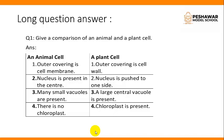Point number 2: In animal cell, the nucleus is present in the center. In plant cell, the nucleus is pushed to one side. Point number 3: Many small vacuoles are present in animal cell. A large central vacuole is present in a plant cell. Point number 4: There is no chloroplast in animal cell, and chloroplast is present in a plant cell.